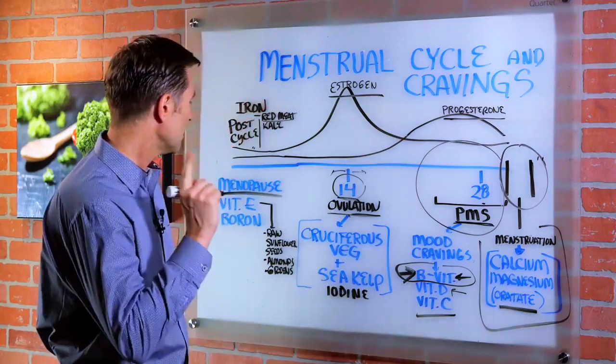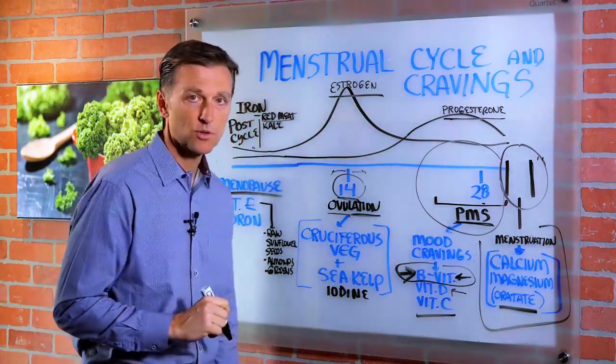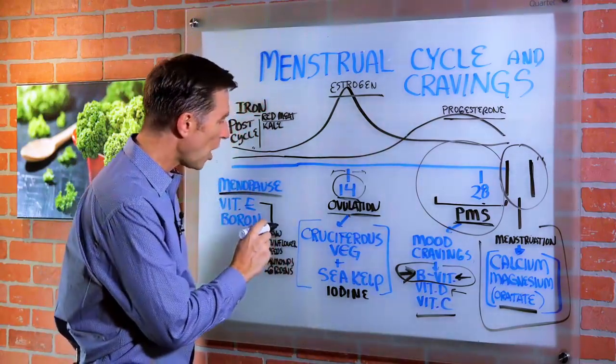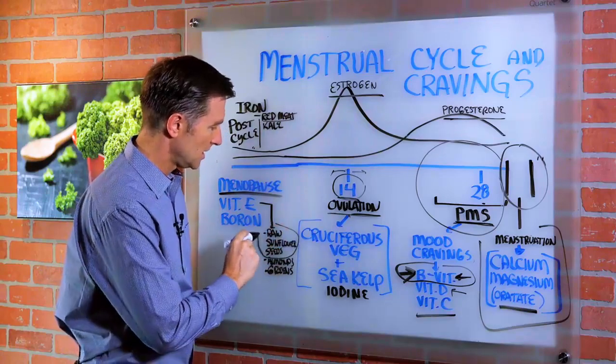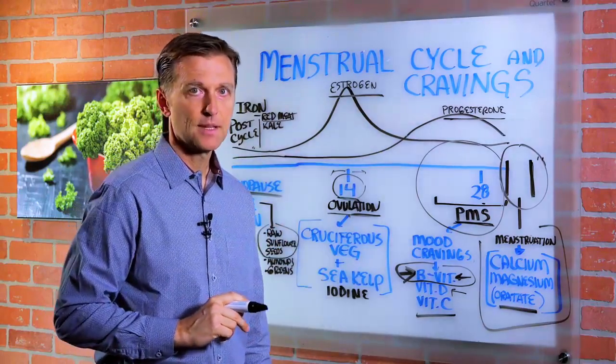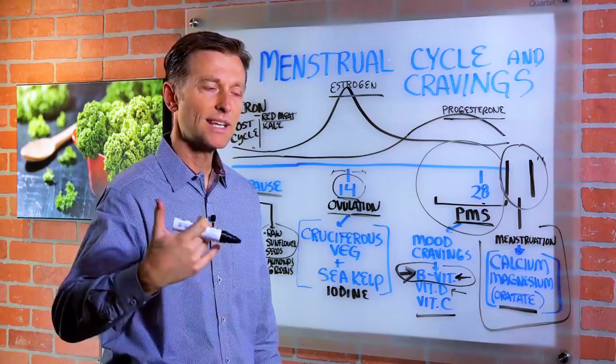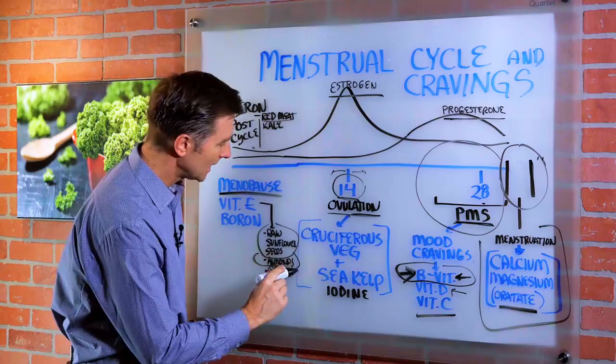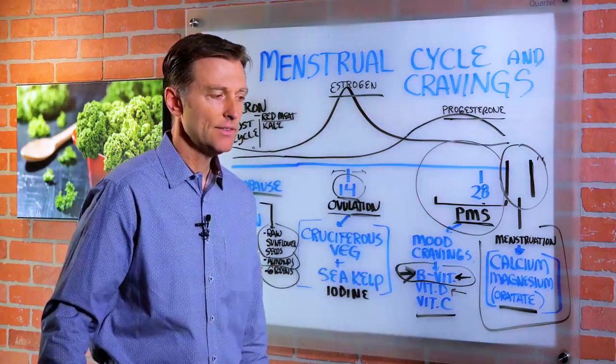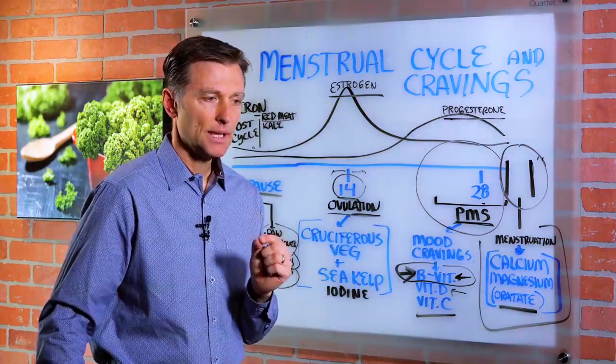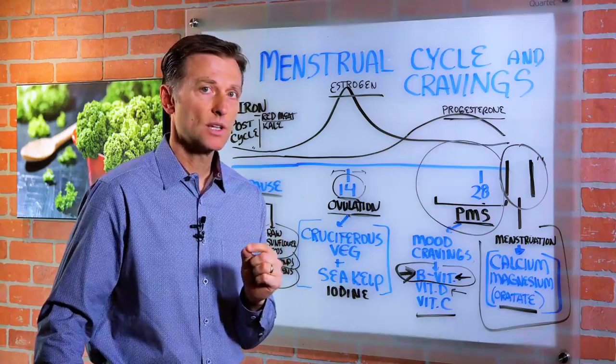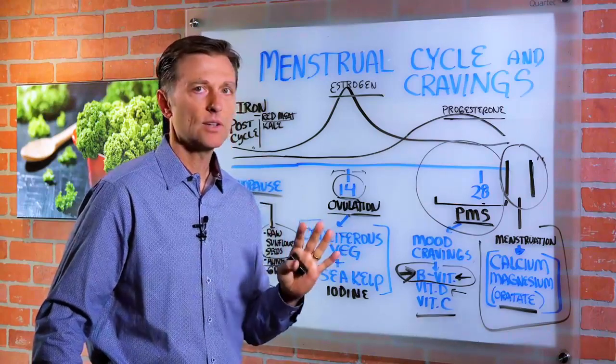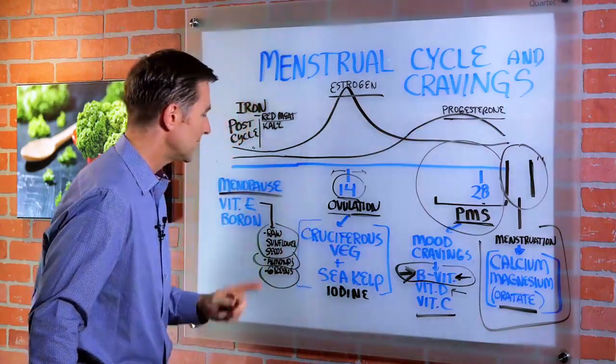So if you were to increase vitamin E, you would see some great improvements. Raw sunflower seeds are probably your best bet. Some of the other seeds would be good too, but it can't be roasted. It has to be raw. Almonds, really important. And leafy greens, like even snap peas or green beans are really good. Anything green is going to give you good amounts of vitamin E.